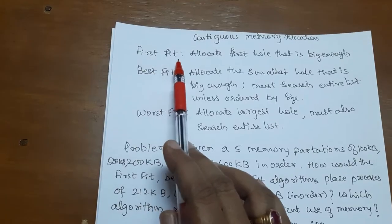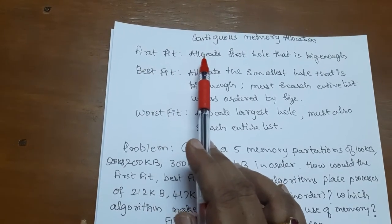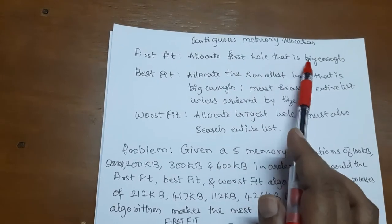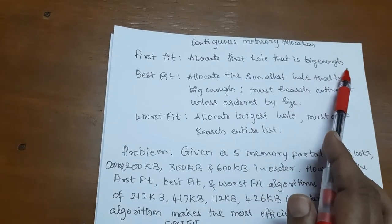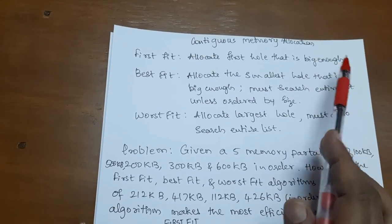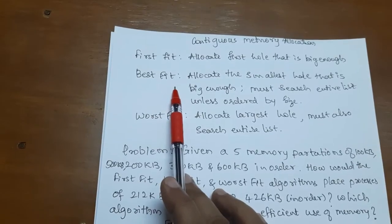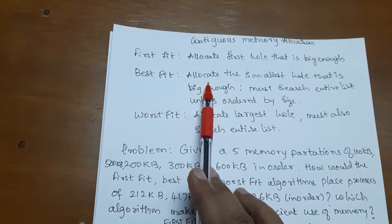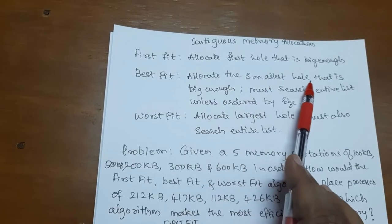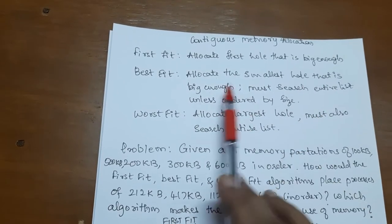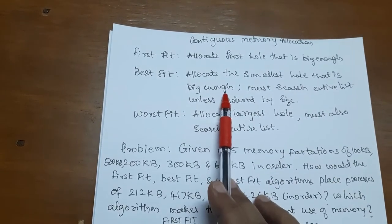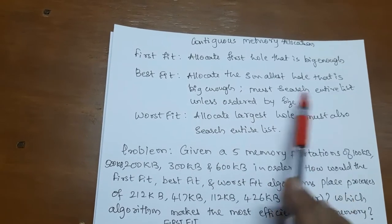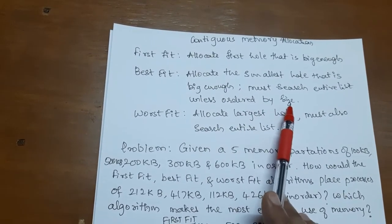First fit is used to allocate memory for processes — it finds the first hole that is big enough to fit that process. The second method is best fit, where the process is allocated to the smallest hole that is big enough to hold the process. We must search the entire list unless it is ordered by size.